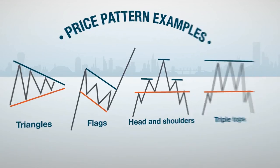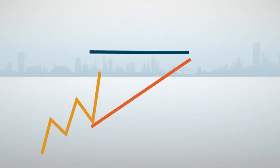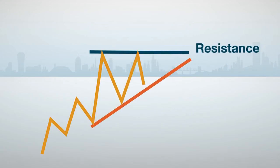Let's look at an example. This is called an ascending triangle, and it forms when a stock's highs are hitting resistance while its lows are steadily rising. Some investors might interpret the narrowing between the highs and lows as a signal that the stock is about to break through resistance. If it does, the stock's price is expected to rise in value right after the breakout.